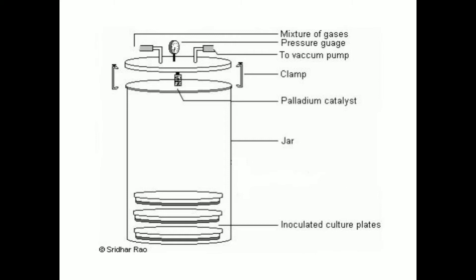The lid also contains two terminals that can be connected to an electric supply. There is a capsule containing alumina pellets coated with palladium, which is suspended under the lid by stout wires that are connected to the terminals to heat the catalyst for its activity. Nowadays this catalyst is also available active at room temperature.